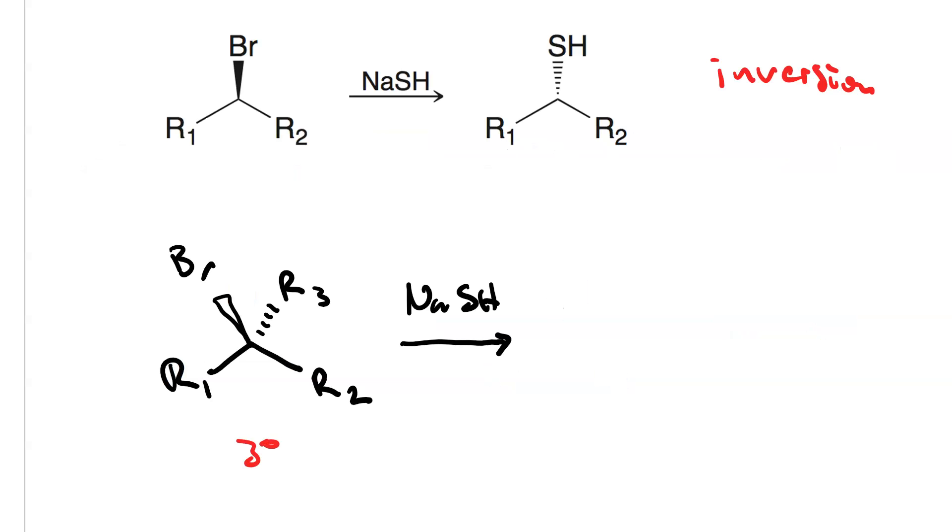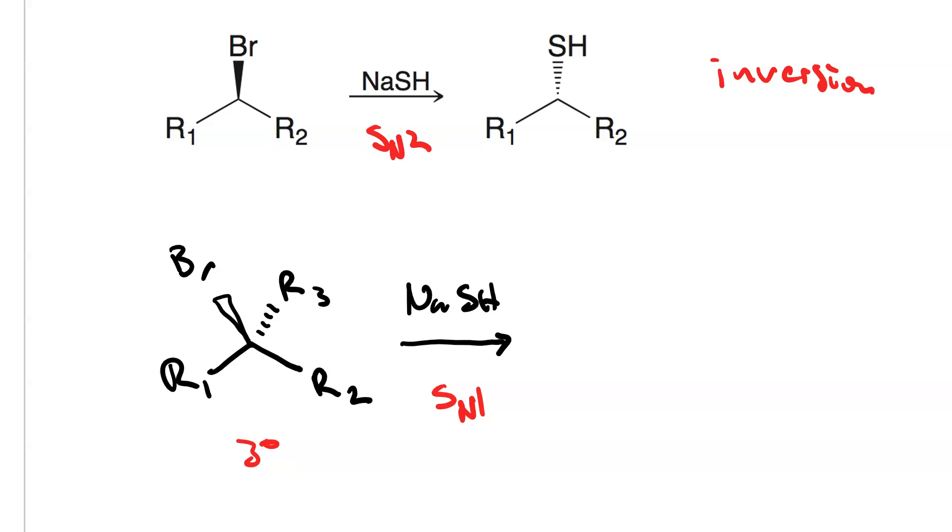If we have a tertiary alkyl halide and we react it with sodium sulfhydride, we'll get a mixture of inversion and retention products because it goes SN1 as opposed to SN2. And, of course, that'll be a 50-50 mixture of retention and inversion product when it's SN1.